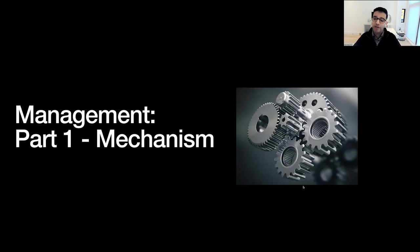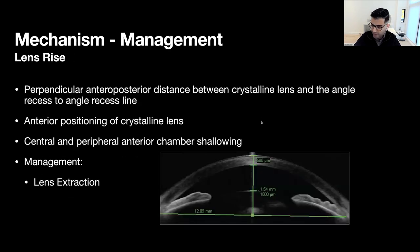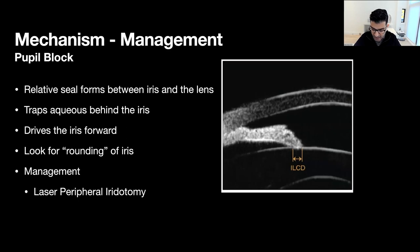If the mechanism driving the angle closure is clearly pupil block, as shown in this image — where we see rounding and contact directly onto the anterior lens capsule — we can clearly see how a peripheral laser iridotomy will help alleviate this mechanism by relieving the relative seal between the iris and the anterior capsule. By inserting a hole in the peripheral iris, we can establish an equilibrium between the anterior chamber and the sulcus space, thereby flattening out the iris and hopefully opening up the angle. If you have pupil block, given the low risk associated with peripheral iridotomy, consider peripheral iridotomy.